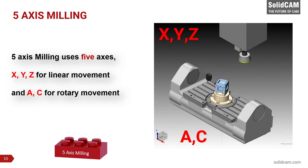The two additional axes allow designers and engineers the freedom to create much more imaginative parts that can easily be machined. In mechanical engineering, multiple combinations of 5-axis implementation can be found. The combination shown is one of the most common 5-axis configurations, but it is far from the only available one.